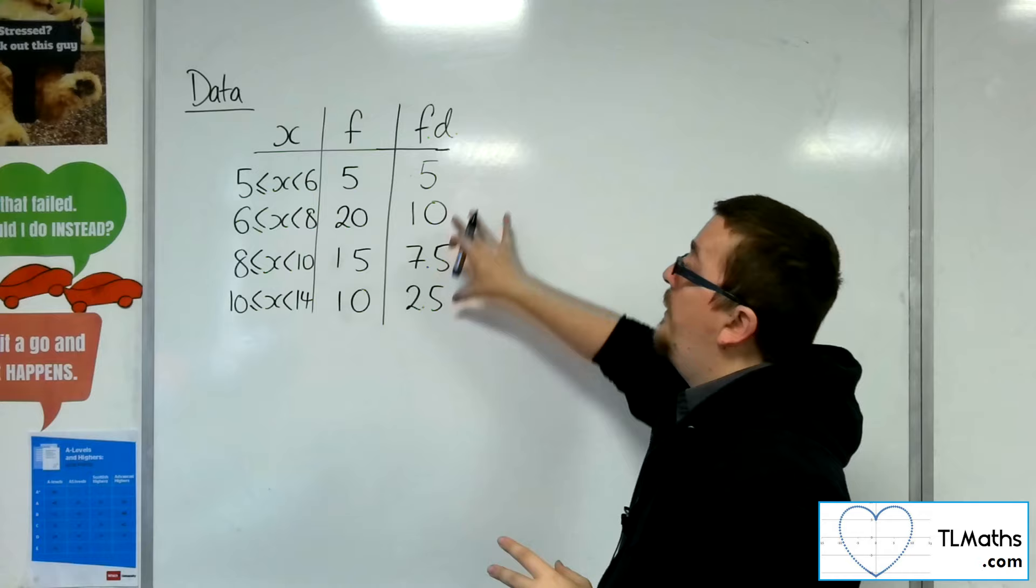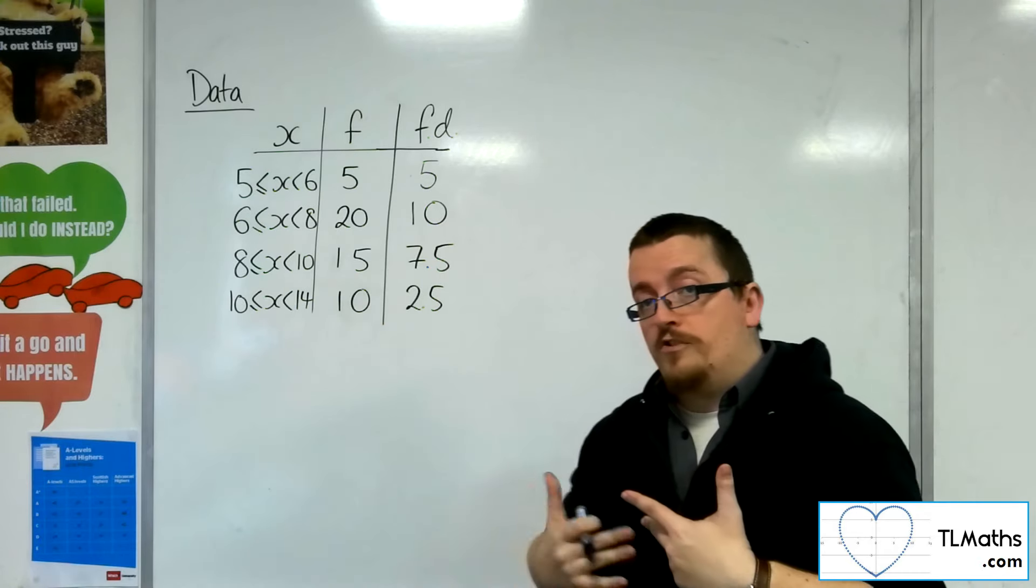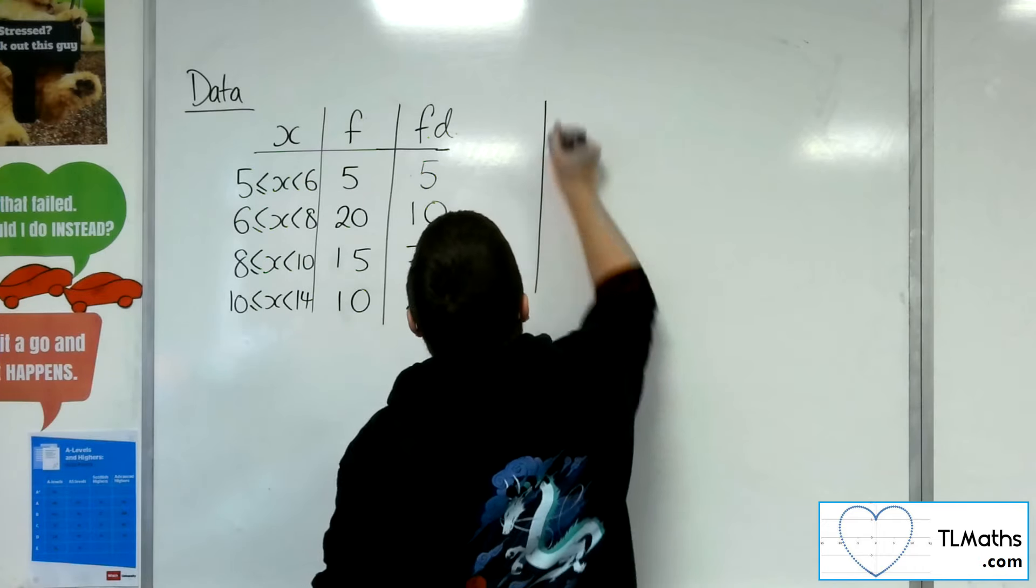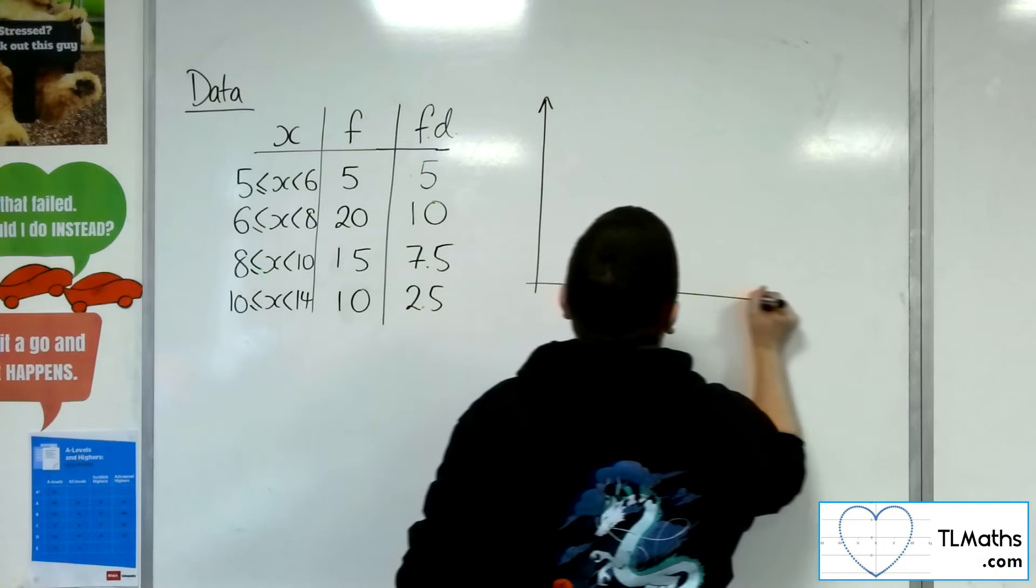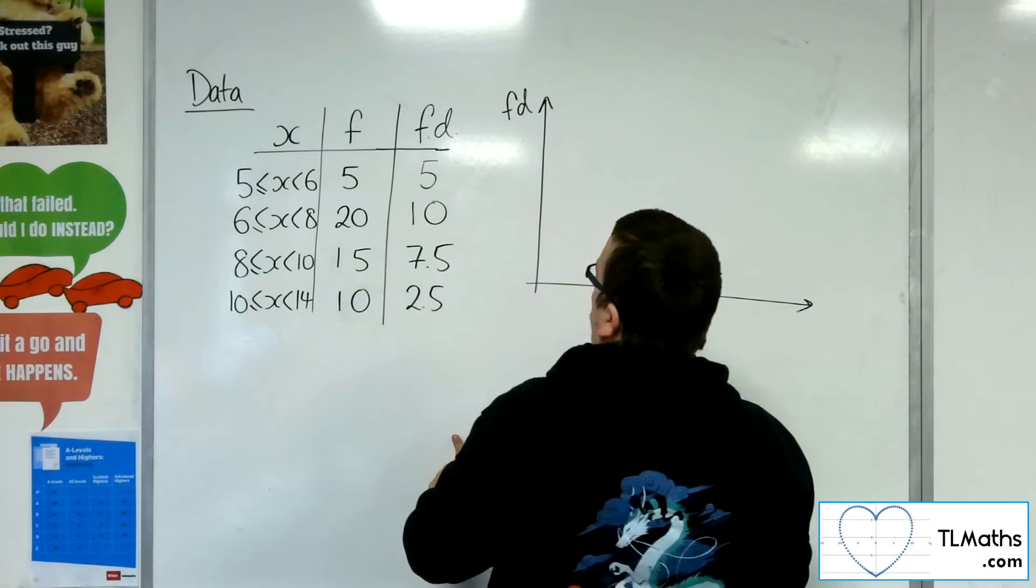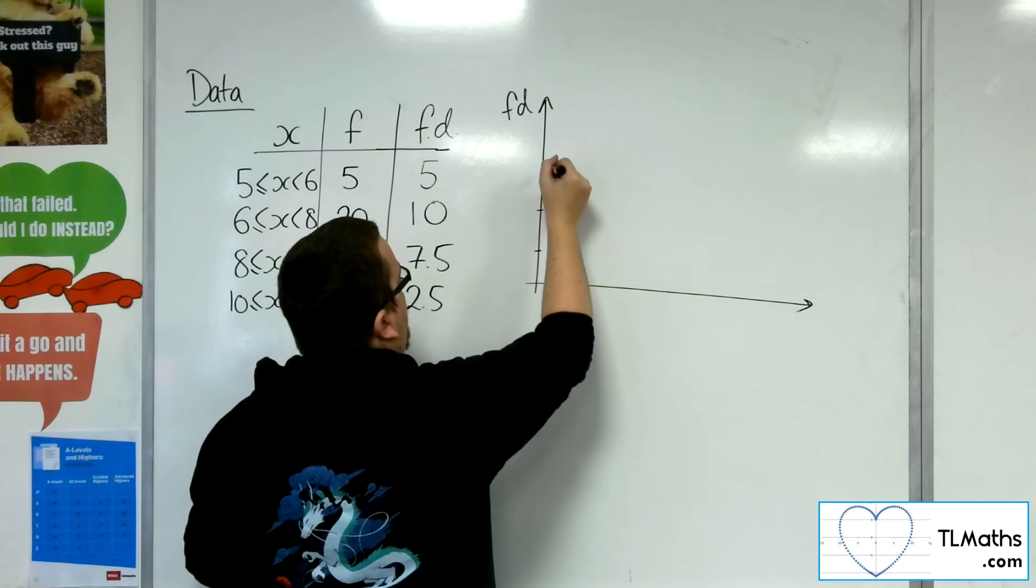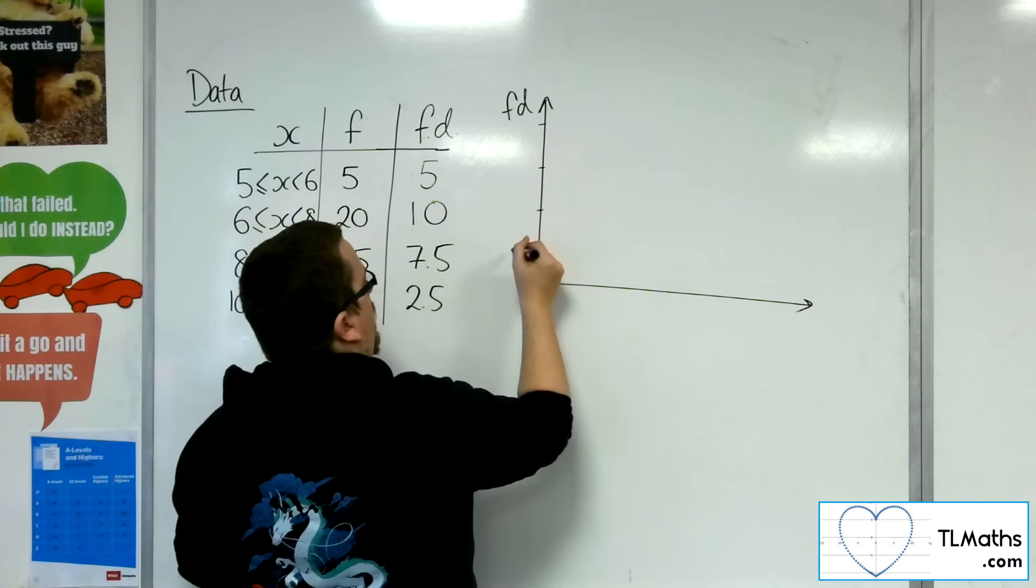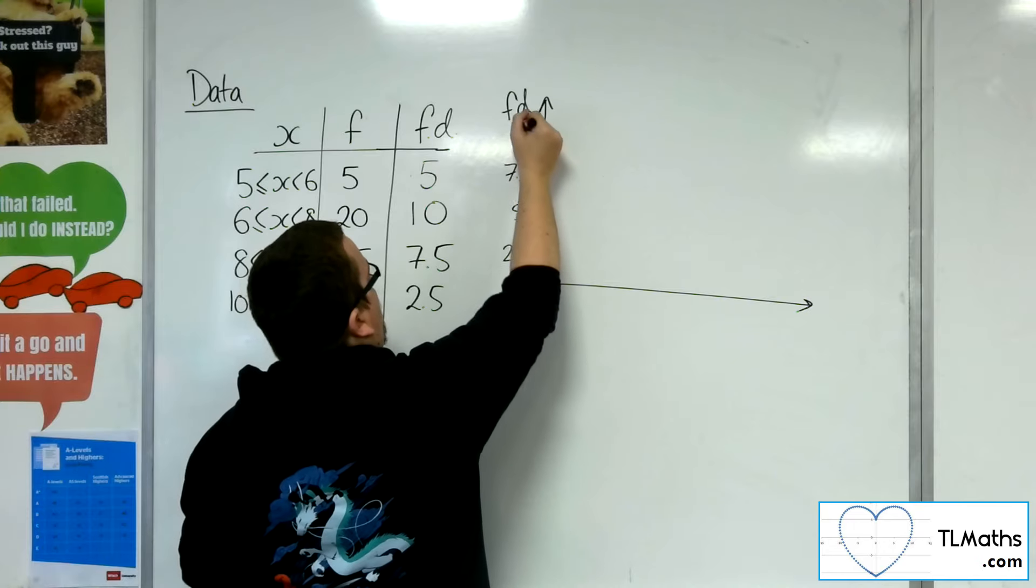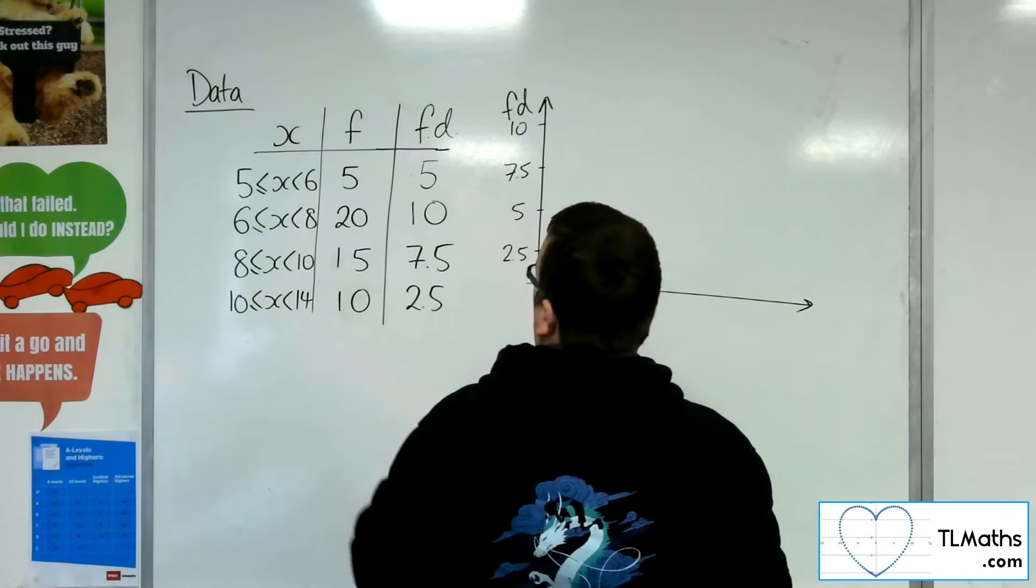So if I now plot the frequency density as the vertical axis, and the x is the horizontal axis, then that will look better and will better represent the data. So frequency density. So let's go up in 2.5s. So 2.5, 5, 7.5, and 10. And we're going to 14.